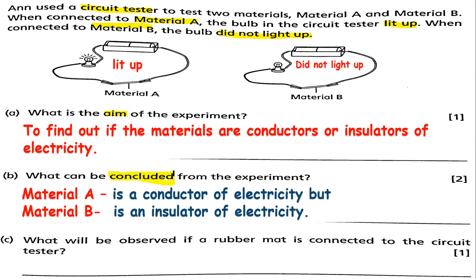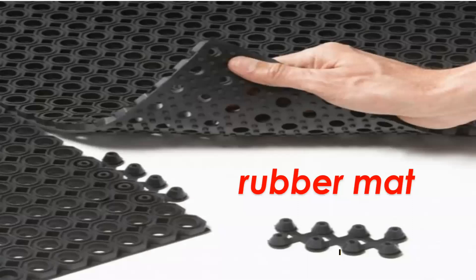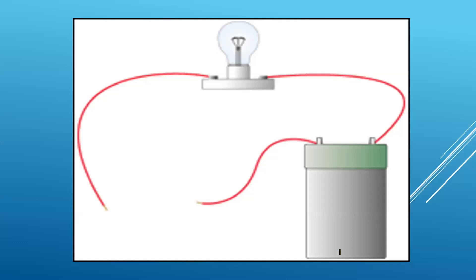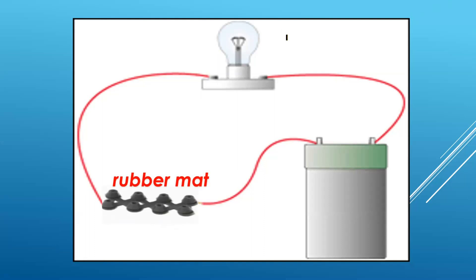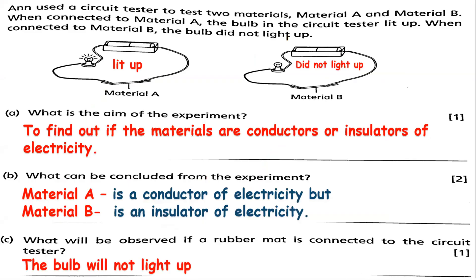Let us see: what will be observed if a rubber mat is connected to the circuit tester? This is a rubber mat. What if we connect the rubber mat to a circuit tester — will the bulb light up or not light up? Rubber mat is an insulator that does not allow electric current to flow through it. So the bulb will not light up.